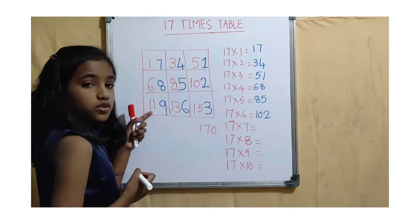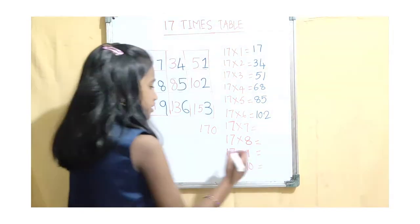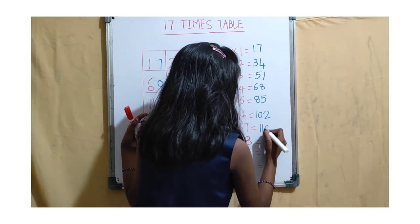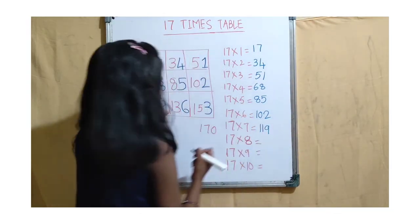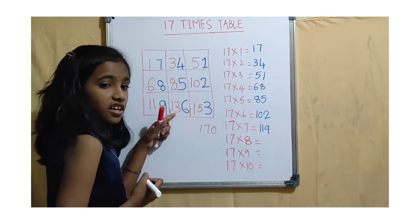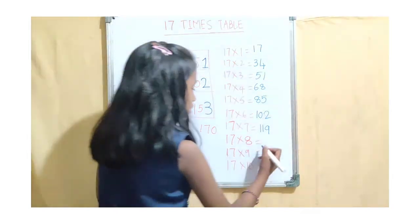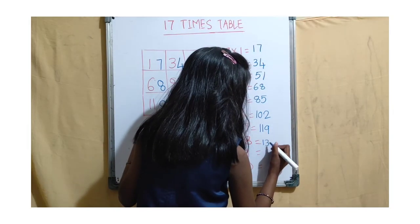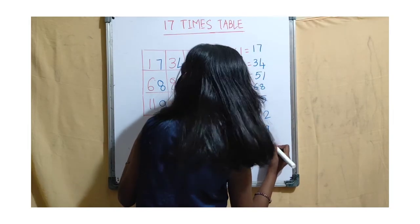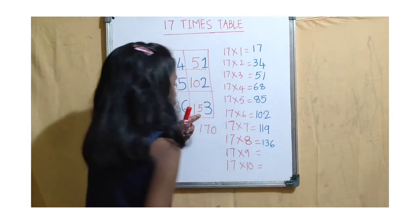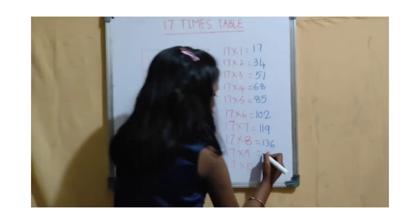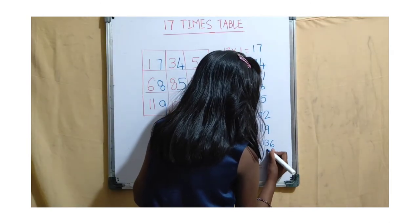17 × 7 = 119. 17 × 8 = 136. 17 × 9 = 153.